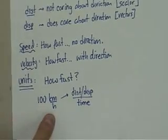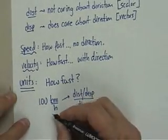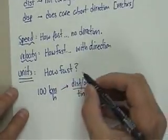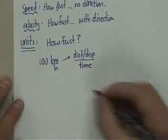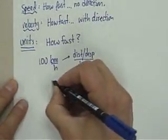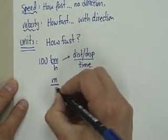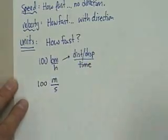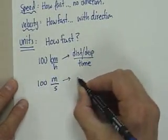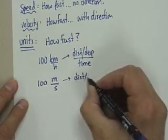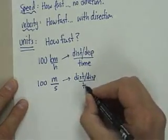You can also have another way of saying how fast you're going. It's just a different unit. It's something that we're actually going to end up using a little bit more often. It's meters per second. Now, if you're going 100 meters per second, that's really fast. But you can see again, that's either distance or displacement, depending, and a second is time.